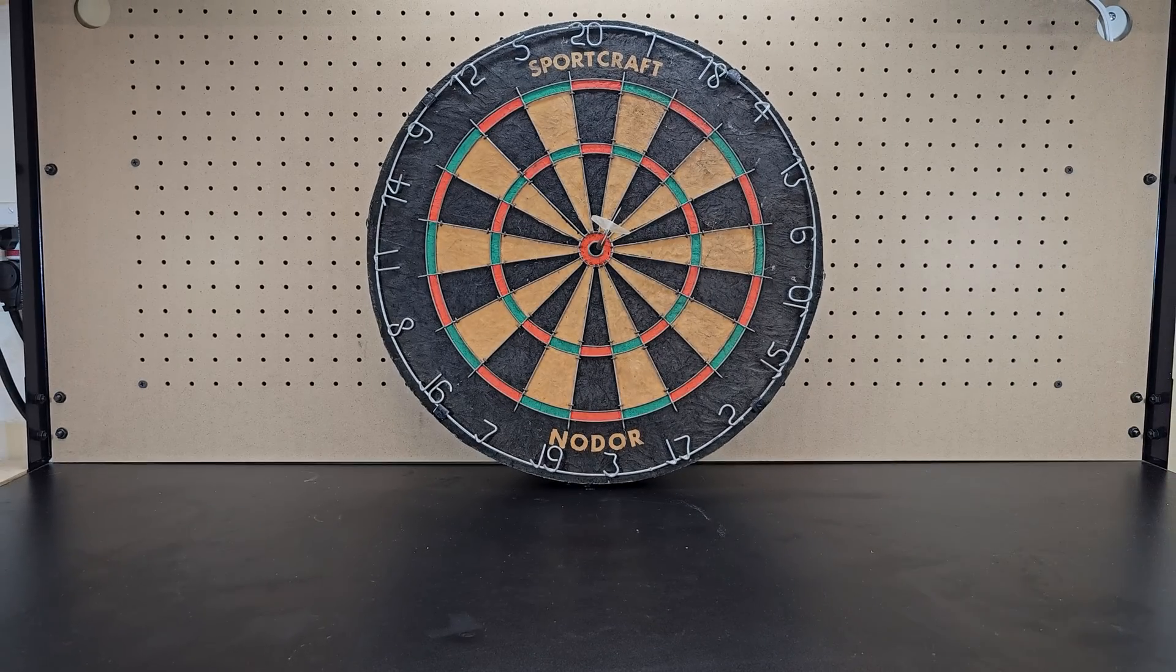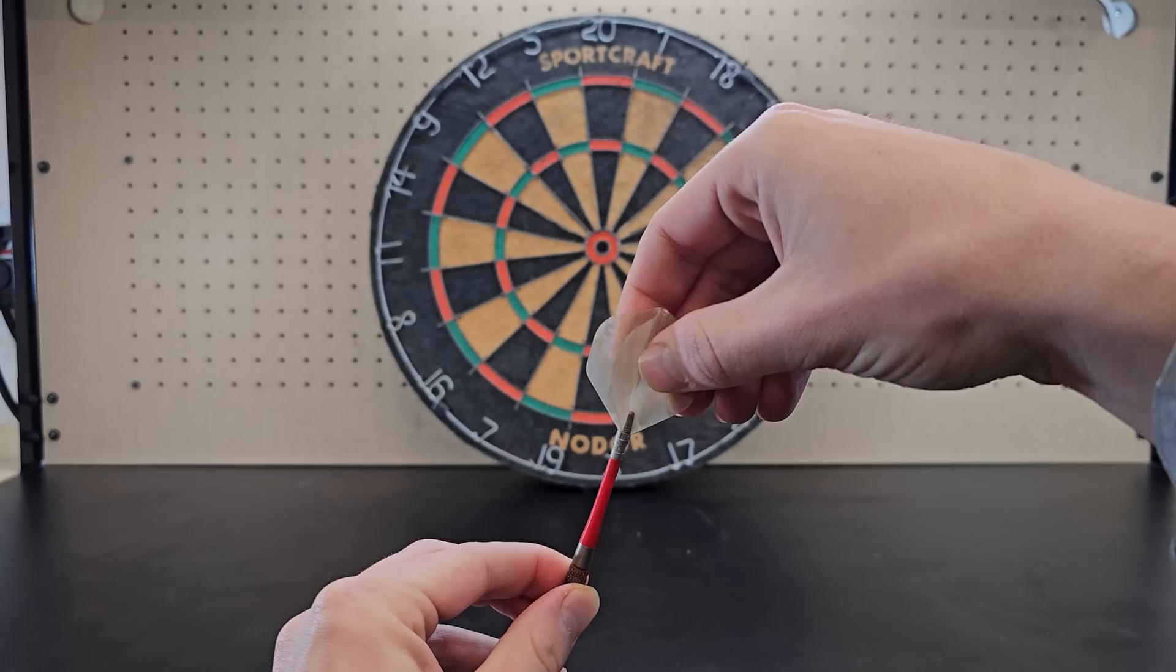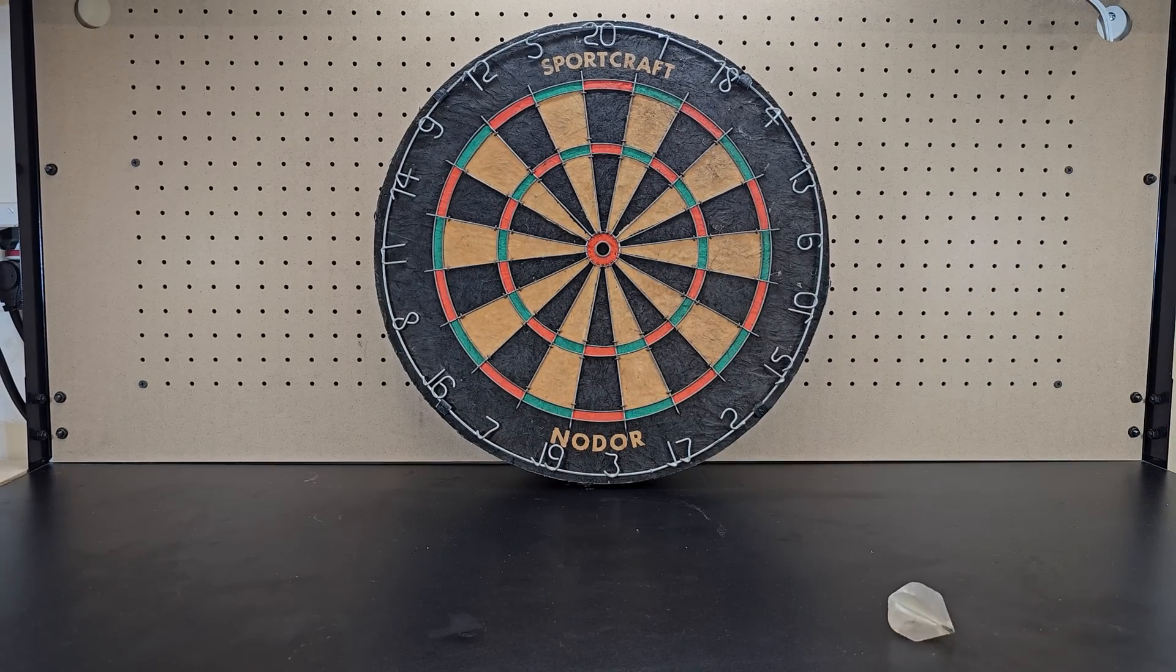A regular dart can stay straight because its weight is more concentrated to the front and this lighter four-pronged wing called a flight helps keep it straight. Without it, the dart doesn't work nearly as well, if at all.